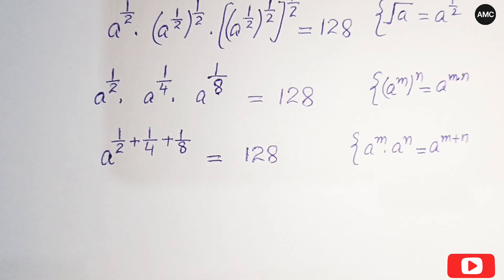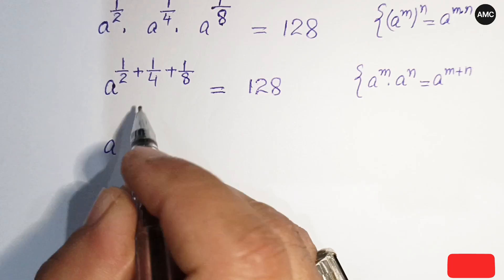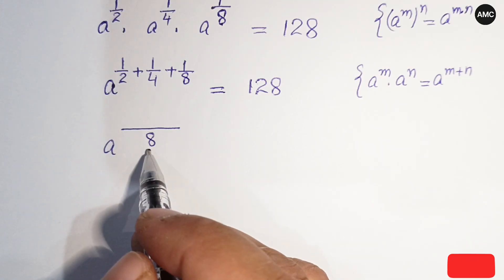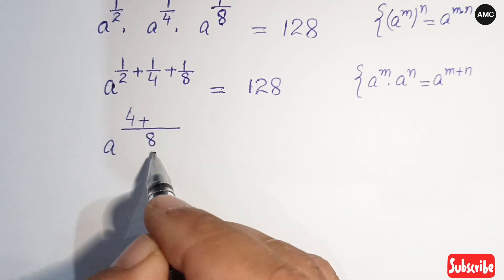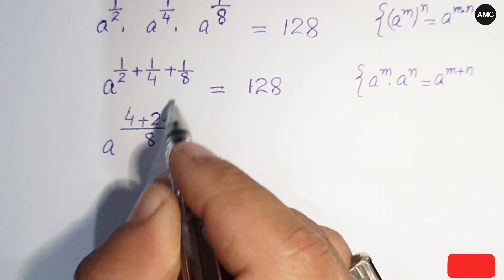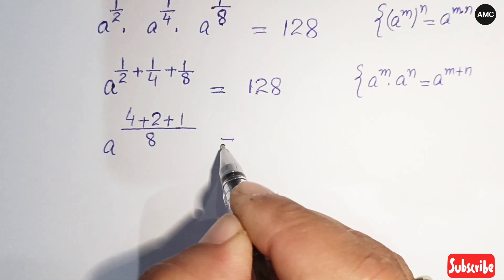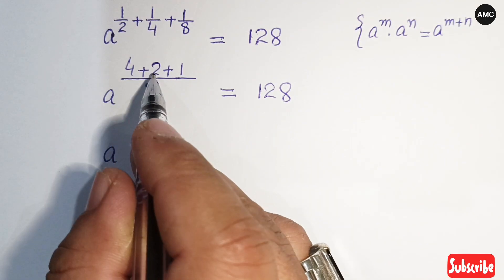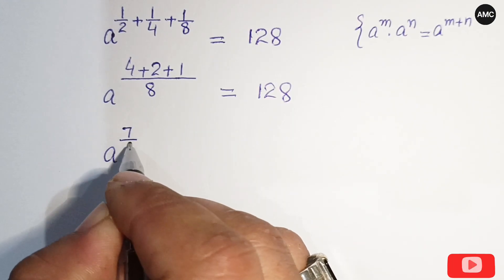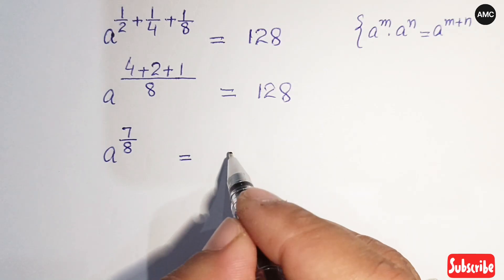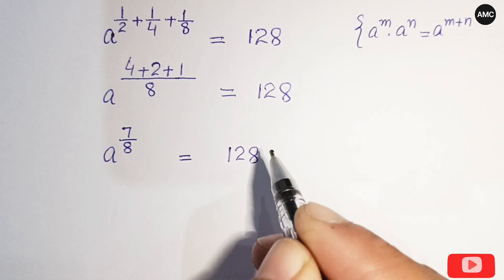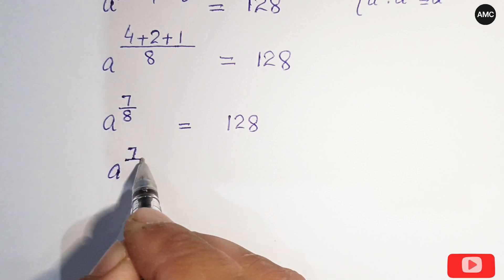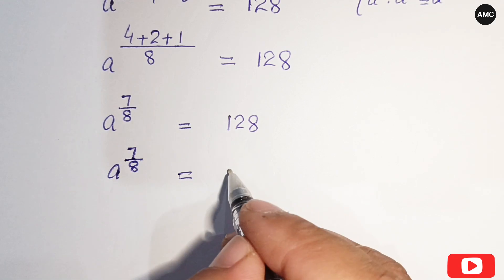Taking the common multiple of 8: 1/2 = 4/8, 1/4 = 2/8, 1/8 = 1/8. So the sum is (4 + 2 + 1)/8 = 7/8. Therefore a to the power 7/8 equals 128.